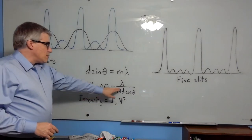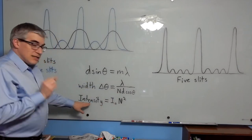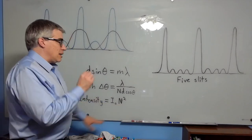The width of them goes down with a factor of n. So if you have n slits, it gets n times narrower. The intensity of each slit actually goes up as n squared. So it gets a lot brighter and a lot narrower.